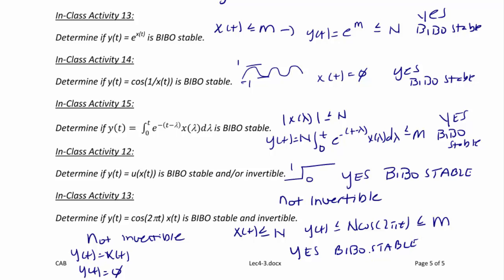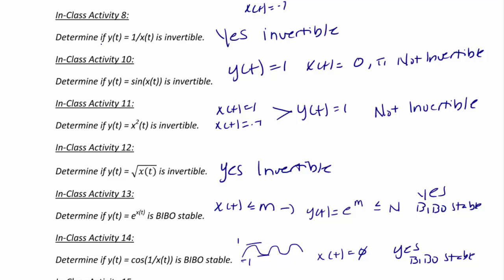What is an example of a system that is not BIBO stable? From the earlier examples, y(t) = 1/x(t) is not BIBO stable. If x(t) = 0, the output y(t) = 1/0 goes to infinity — a bounded input produces an unbounded output. This concludes the lecture on special cases for linearity and time invariance, and determining if a system is BIBO stable or invertible.